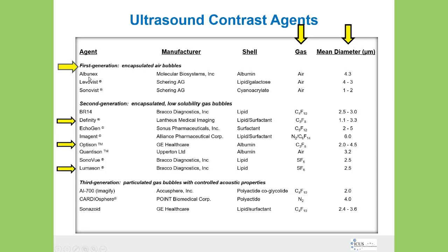Many of us that used Albunex didn't even have second harmonics then, so we would be sitting there waiting — is the contrast there yet? From the first generation agent to the second, we made a huge leap with our image quality. Definity, OptiSign, and Lumison are all second-generation contrast agents. When we began using those, we had second harmonics, so our equipment really helped us to better image the contrast. The shells, gas, and mean diameter vary among those three agents we're probably all using clinically.